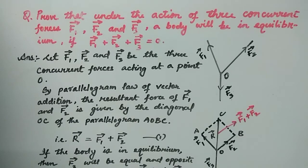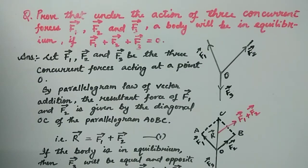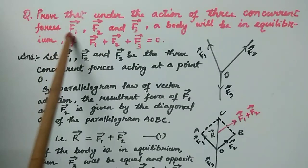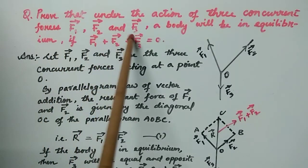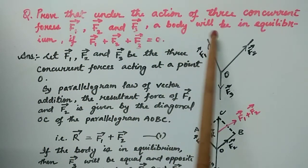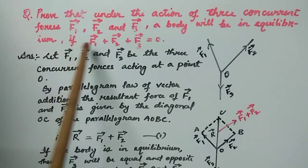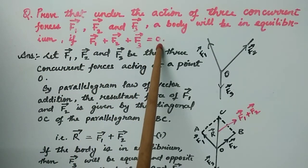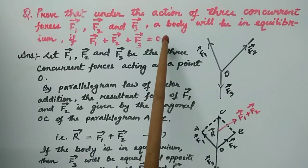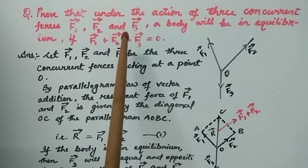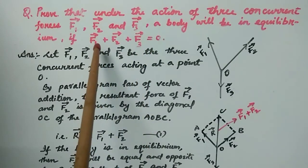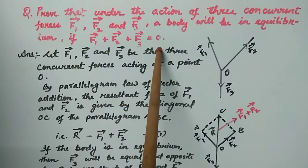Problem on concurrent forces in equilibrium: Prove that under the action of three concurrent forces F1 vector, F2 vector, and F3 vector, the body will be in equilibrium if F1 vector plus F2 vector plus F3 vector equals zero.